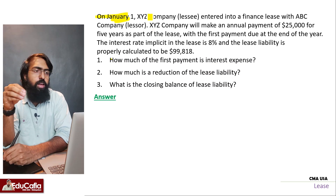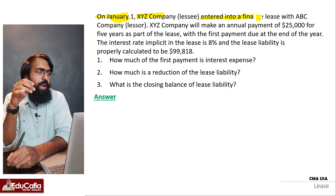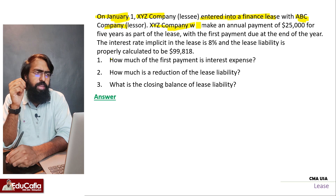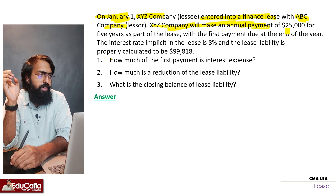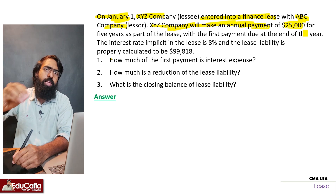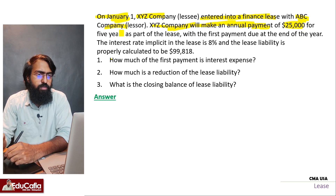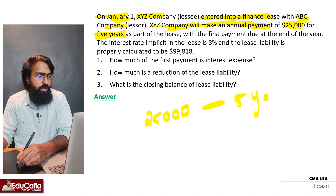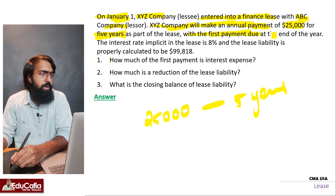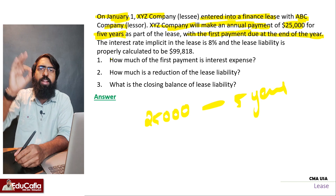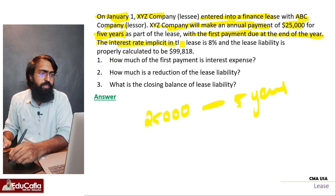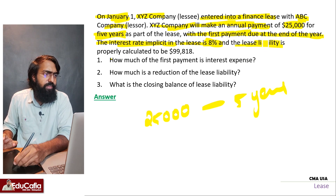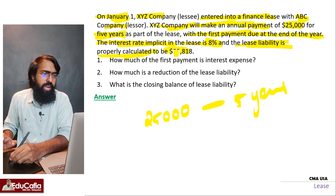In January, XYZ company entered into a finance lease. XYZ company will make annual payments for 5 years, with the first payment due at the end of the year. The interest rate implicit is 8%, and the lease liability is properly calculated at $99,818.